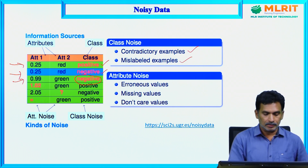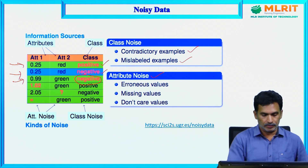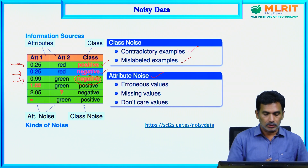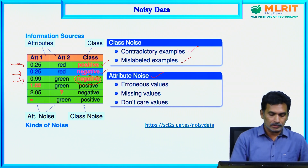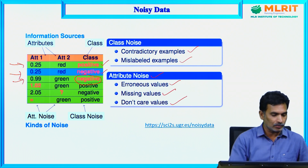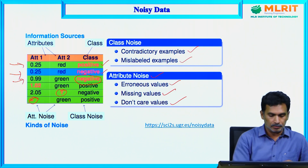Similarly, attribute noise was also discussed in previous lectures. Attribute noise includes error values, missing values, or do-not-care values — these are possible types of attribute noise.